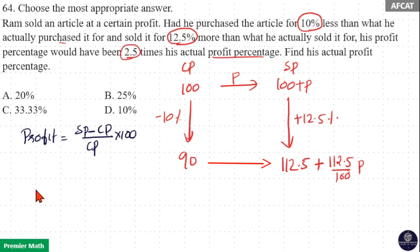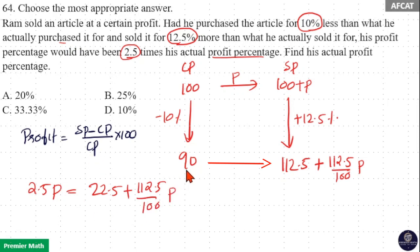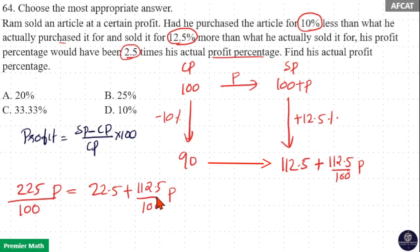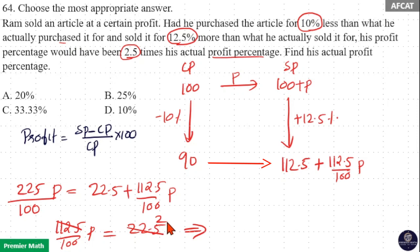The new profit is 2.5 times the actual profit, so 2.5P equals the new sell price minus new cost price, divided by 90, into 100. Rearranging: 90 into 2.5 equals 22.5. This gives 225 percent P minus 112.5 percent P equals 112.5 percent P equals 22.5. Multiplying 22.5 by 100 and dividing by 112.5 gives P equals 20. So option A is the answer.